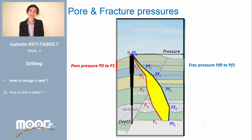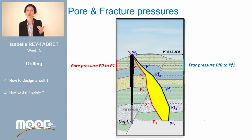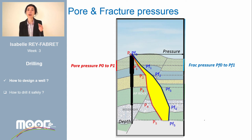Both pore pressure (in red) and fracture pressure (in blue) can be plotted on a pressure-depth graph. The mud pressure has to be in the yellow zone, which is called the mud window. For each lithology to be drilled, the mud has to be well adapted to its characteristics. The well is therefore drilled in different phases, each phase corresponding to a new mud to be used. At the end of a phase, a casing is installed and cemented to protect the well from the formation already drilled and to finalize the well walls. The definition of each of these phases is called the well design.